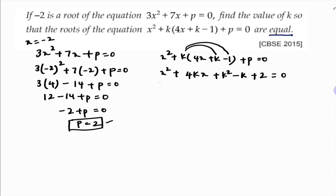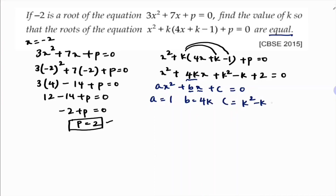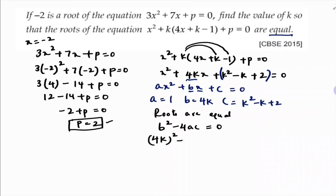If the roots are equal, then the discriminant b² minus 4ac = 0. Comparing with the standard form ax² + bx + c: a = 1, b = 4k, and c = k² minus k + 2. So the discriminant condition gives (4k)² minus 4 × 1 × (k² minus k + 2) = 0.